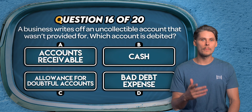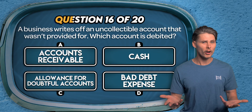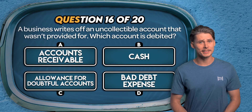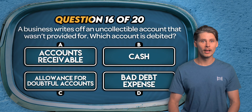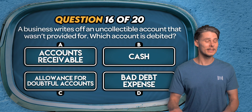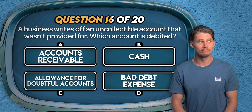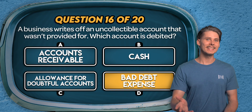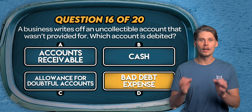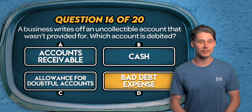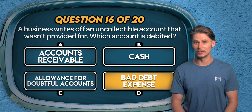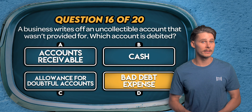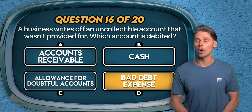Question 16. A business writes off an uncollectable amount that wasn't provided for — which account is debited? Accounts receivable, cash, the allowance for doubtful debts, or the bad debt expense account? The answer is D — bad debt expense. If the bad debt hasn't been provided for, the business should debit the bad debt expense account to record the cost on the income statement. The other side is a credit to accounts receivable, reducing assets on the balance sheet.